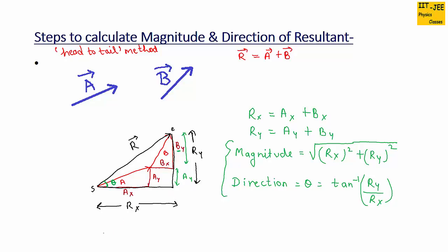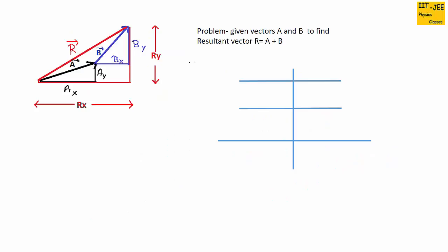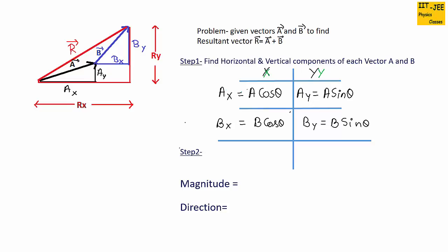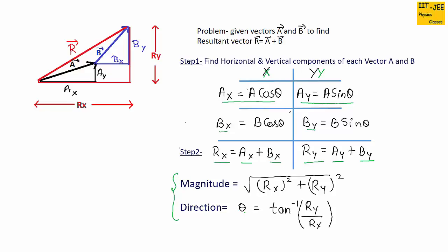Let's review all the steps again. In the problem you are given two vectors a and b and you have to find the resultant vector r, which is the addition of a and b. Step 1: find the horizontal and vertical components of each vector a and b — that means find ax and ay using ax equals a cos theta and ay equals a sin theta, and similarly find bx equals b cos theta and by equals b sin theta. Step 2: add both horizontal components ax and bx to find rx, and add vertical components ay and by to find ry. Then use the two formulas to find the magnitude and direction of the resultant.